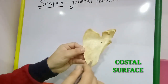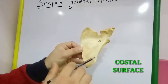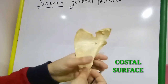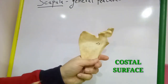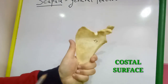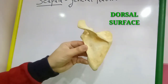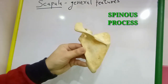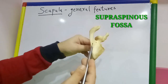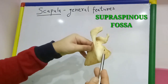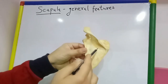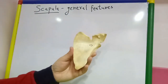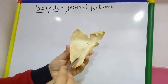Now coming to the costal surface: the costal surface is concave, which fits on the convex thoracic wall, and is directed forwards and medially in anatomical position. This is the costal surface. On the dorsal surface we can see the attachment of the spine, which divides it into the supraspinous fossa above the spine and the infraspinous fossa below the spine. The costal surface is also known as the subscapular fossa.